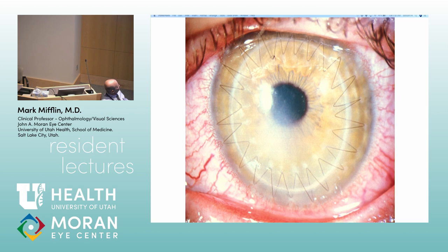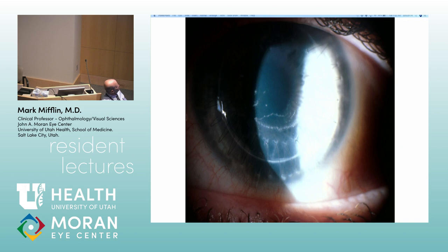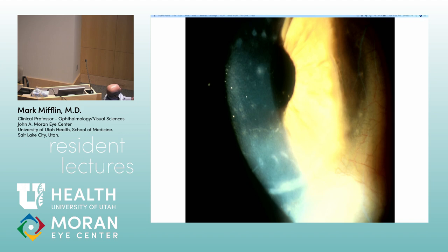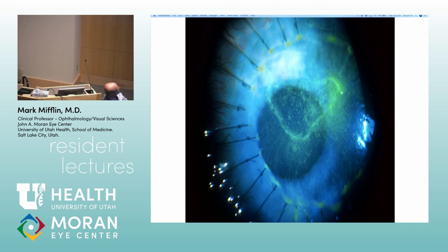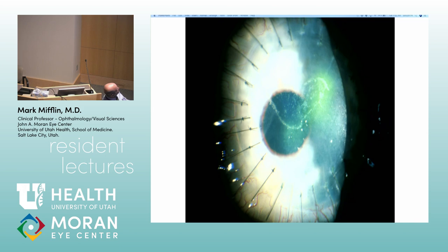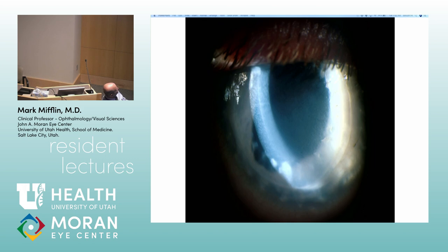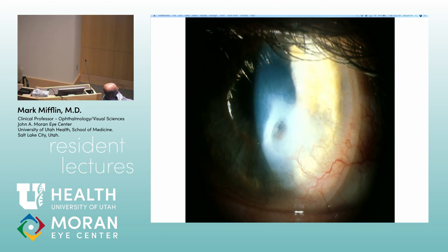KP, rejection, Khodadoust line, KP — this one has everything: subepithelial infiltrate, Khodadoust line, and KP. Subepithelial infiltrates — quote 'epithelial rejection,' but I'm not sure it really is. Just a failed graft with stromal edema. Various other failed grafts. Perforation from recurrent herpes — patch graft.